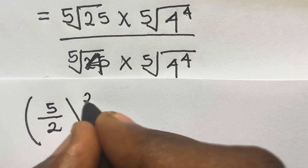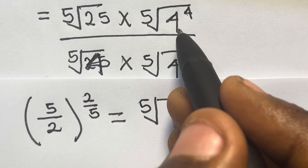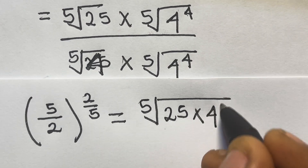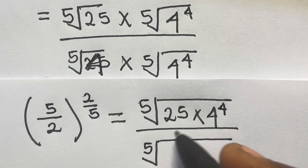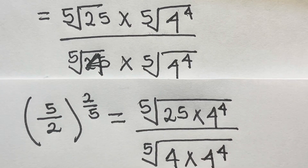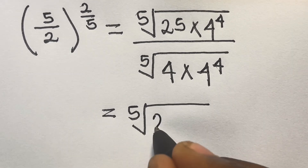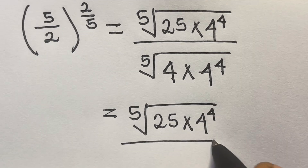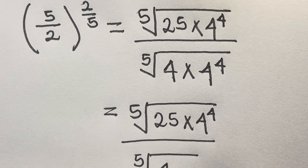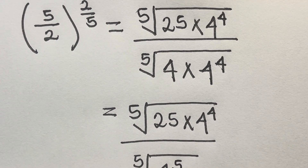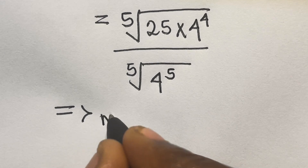So we have 5 divided by 2 raised to the power 2 divided by 5 equals the 50th root of 25 times 4 raised to the power 4, divided by the 50th root of 4 times 4 raised to the power of 4. From here, using the law of indices — this is multiplication of indices — 1 plus 4 gives us 5, so the denominator simplifies. So we have the 50th root of 5.